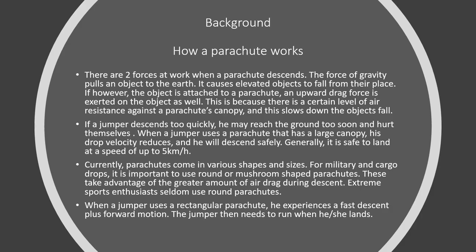So the way a parachute works is that when a parachute opens up, there are two forces acting on it. The first one is gravity, which pulls an object to the earth. And the second one is air resistance, which slows down the parachutist.